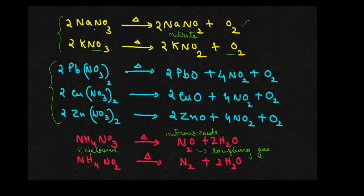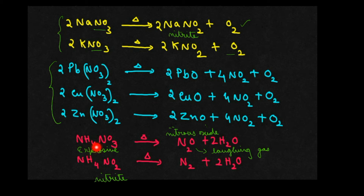If you know the product of decomposition of ammonium nitrate, you can easily predict the product of decomposition of ammonium nitrite also. The difference between ammonium nitrite (NH₄NO₂) and ammonium nitrate (NH₄NO₃) is only one oxygen. So whenever ammonium nitrate is heated, you get N₂O; but whenever ammonium nitrite is heated, you get nitrogen gas (N₂) and water.